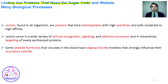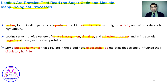Lectins are proteins that read the sugar code and mediate many biological processes. They are found in all organisms, are protein in nature, and can bind to specific carbohydrates. Lectins serve a wide variety of cell recognition functions, work as cell signaling elements, and are involved in cell adhesion processes. Some peptide hormones present in blood have oligosaccharides that determine their circulatory half-life.